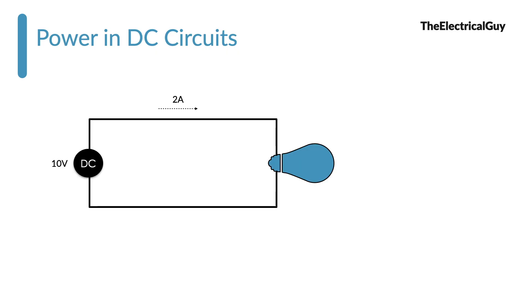Consider the example shown. Let's say we have a 10V DC source which is connected to a bulb, and the current flowing through the circuit is 2A. From this, we can easily calculate the power drawn by the bulb by simply multiplying the voltage with current and that will give us 20W. And this is the power taken by the bulb at any instance in the circuit.